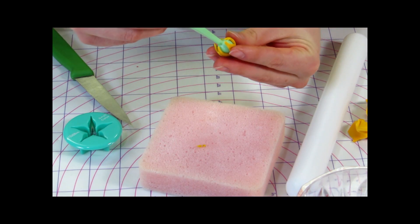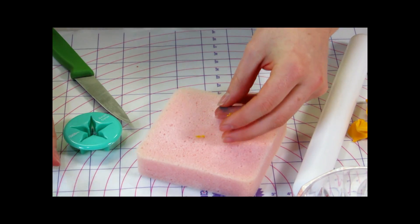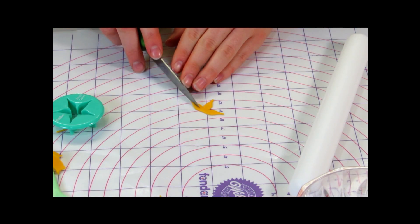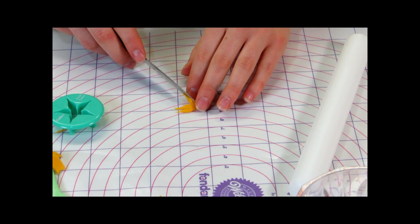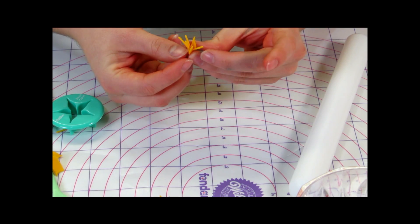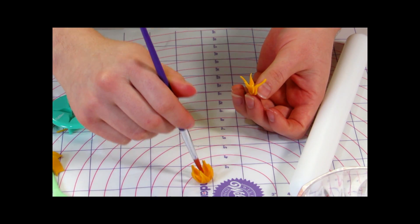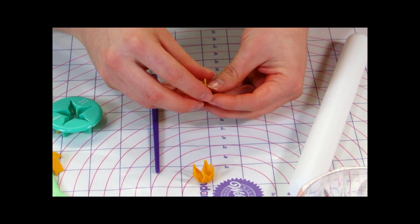I'm going to wrap that around my balling tool just to create a cupped shape. Cut out another calyx. Cut the points again, except I only want half a calyx this time. And then you can just pinch the one end together. That way all the points are facing in the same direction and assemble that.